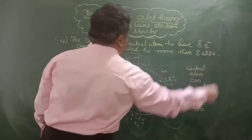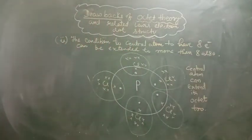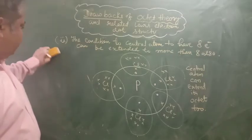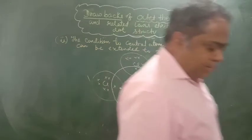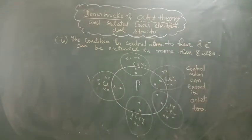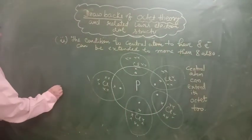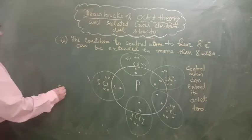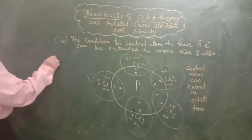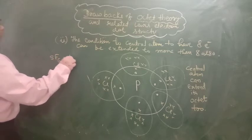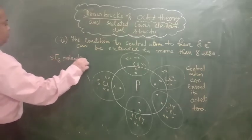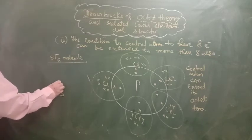Not by this example but by many other examples you can see. We can take one more example. Let us take sulfur SF6 molecule. Sulfur contains 6 electrons in the outermost shell.